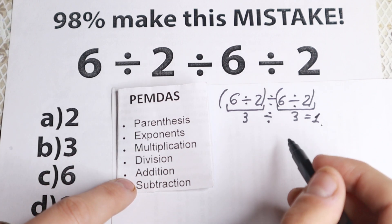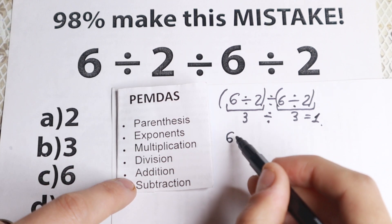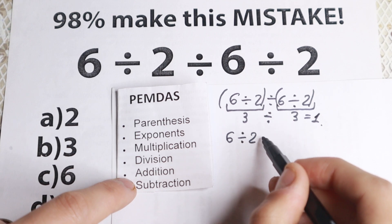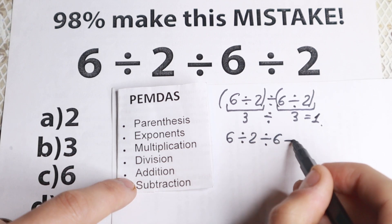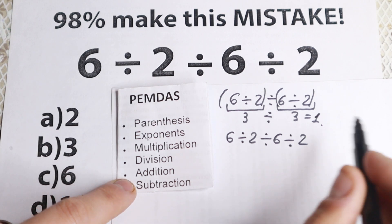And let's try to solve this correctly. Okay, so we have 6 divided by 2, divided by 6, and divided by 2. Okay, let's try to look at this order.